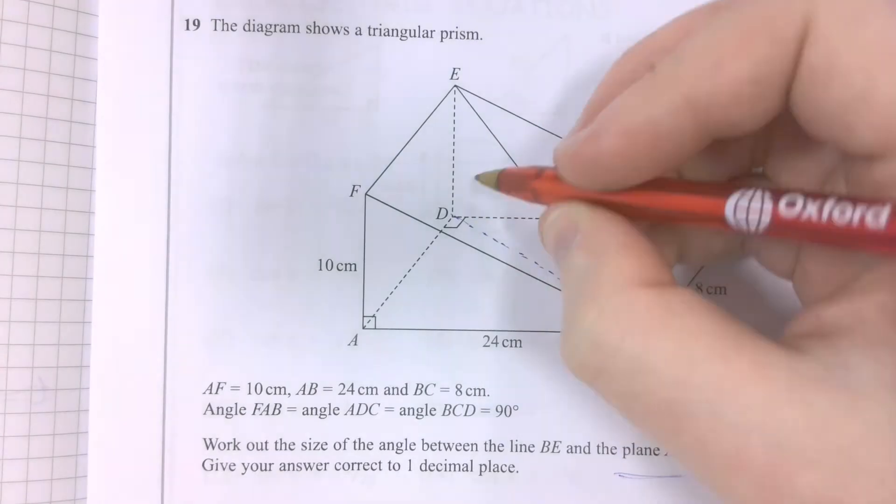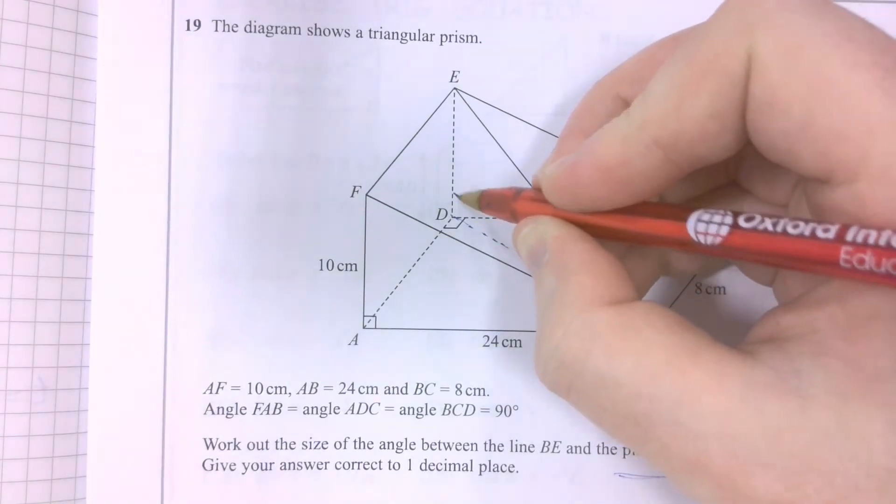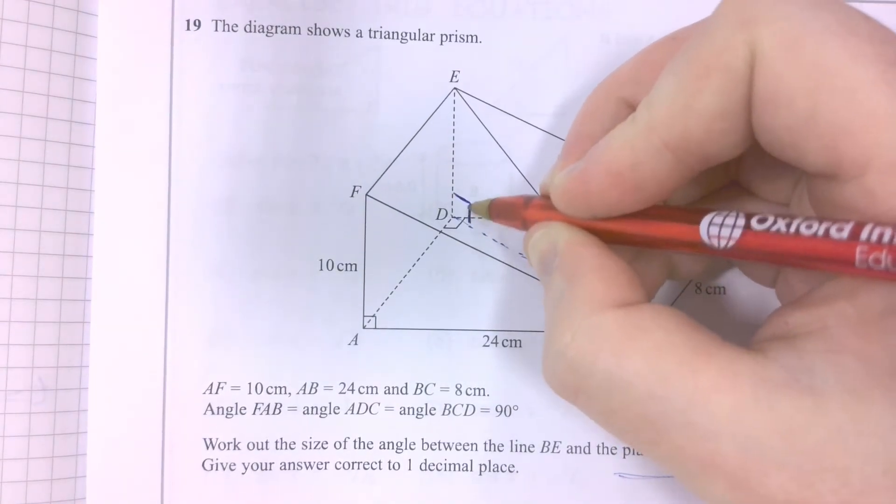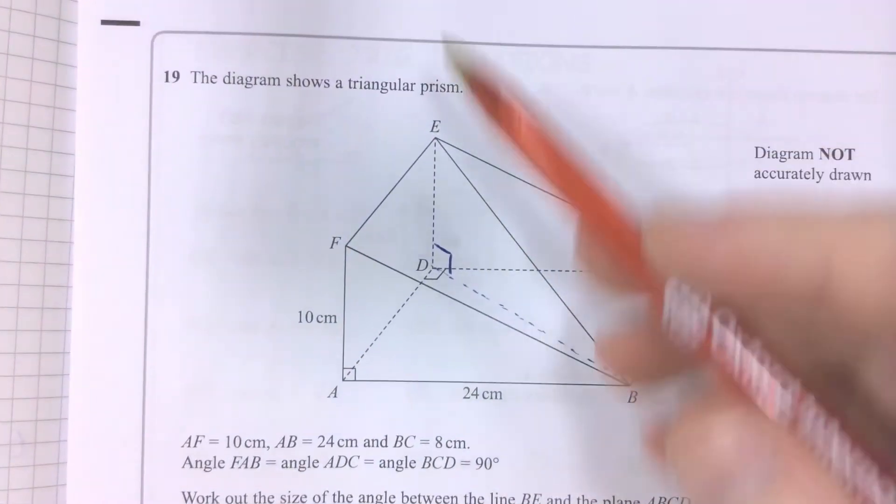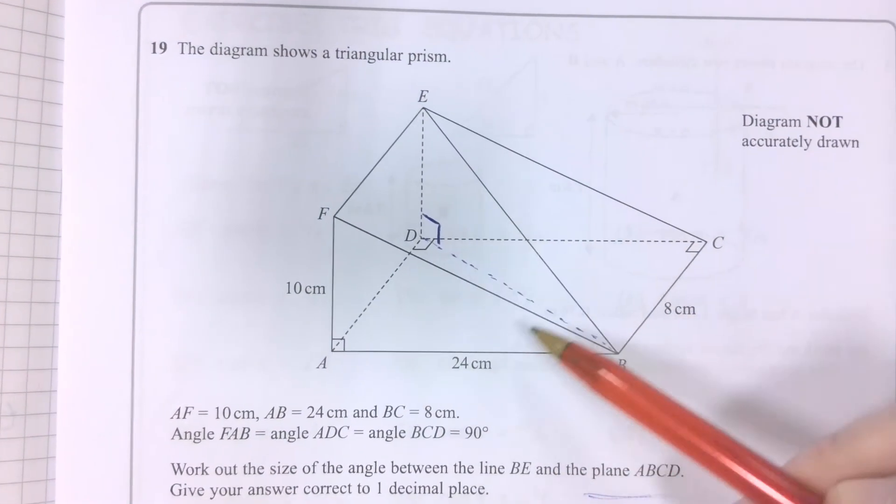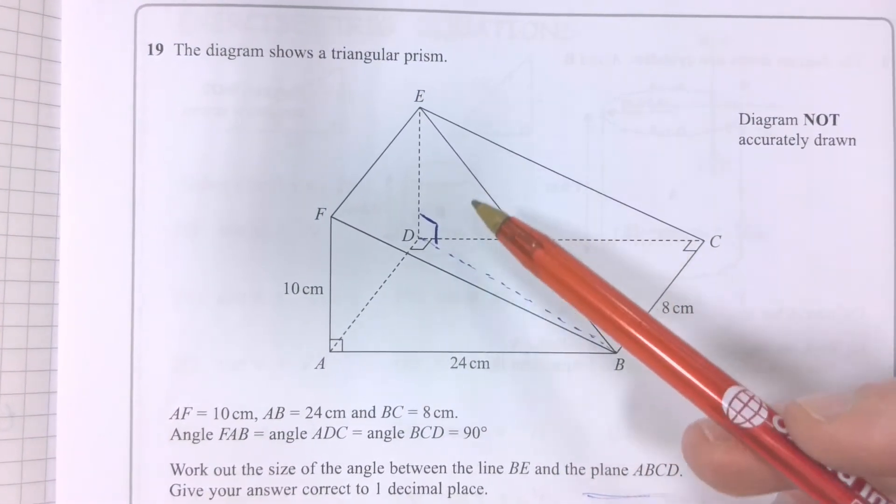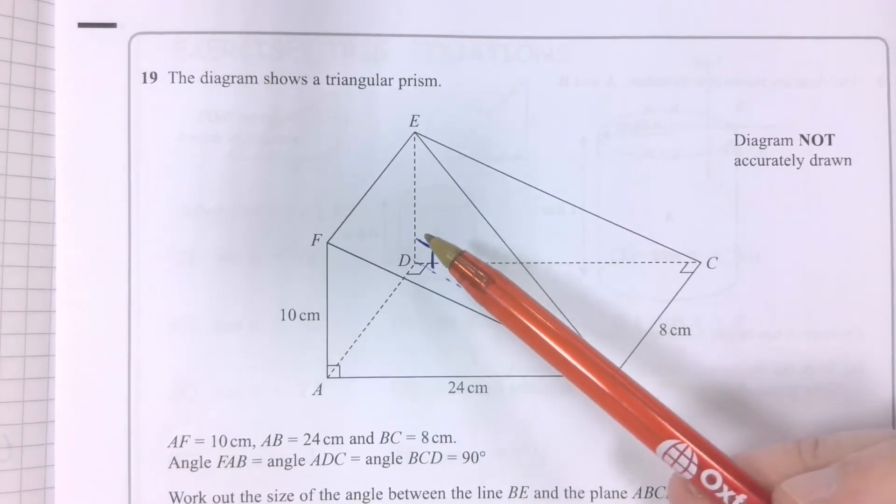What I end up with is a right-angled triangle that's cutting halfway through this triangular prism. I hope that you can visualise that. It's difficult for me to do on paper, I'm afraid.